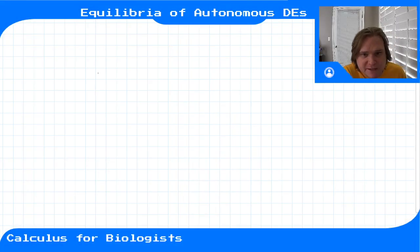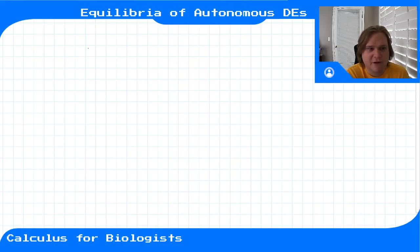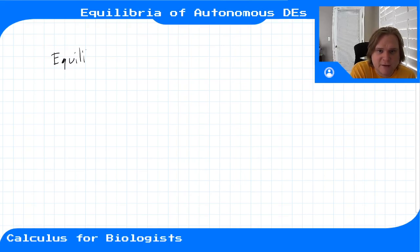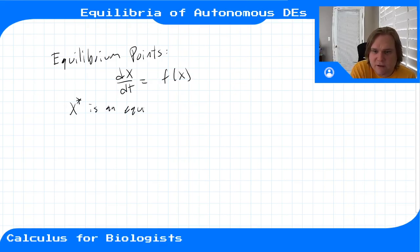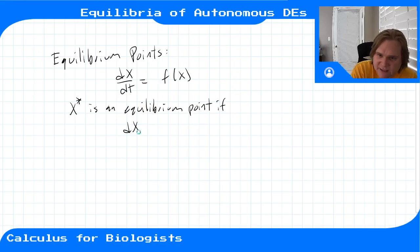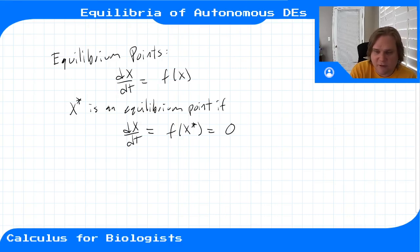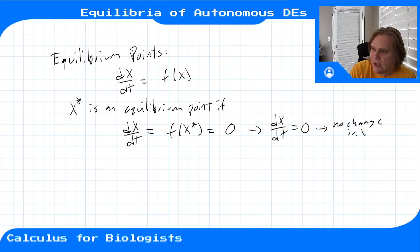For autonomous differential equations, much like discrete time dynamical systems, we can get a lot of information about what these dynamical systems do just by looking for equilibrium points and classifying the stability of those equilibriums — analyzing the behavior of our system around equilibrium points. An equilibrium point for an autonomous differential equation dx/dt = f(x) is a point x* where there is no change in x, meaning f(x*) = 0.